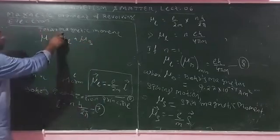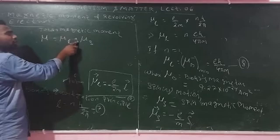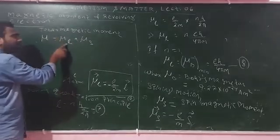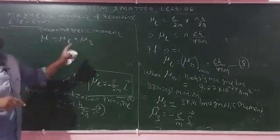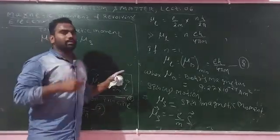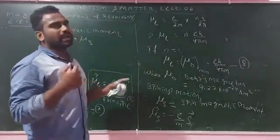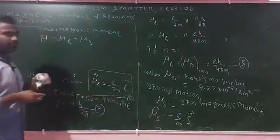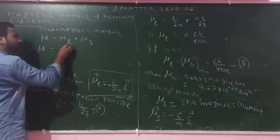The total magnetic moment is defined as the sum of the orbital magnetic moment and the spin magnetic moment: mu_total equals mu_orbital plus mu_spin.